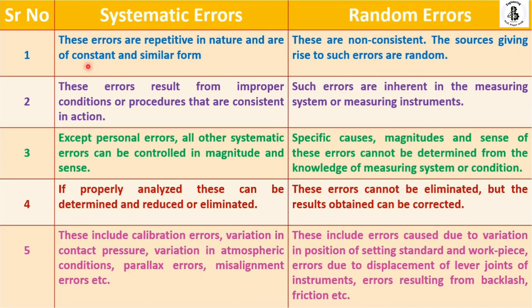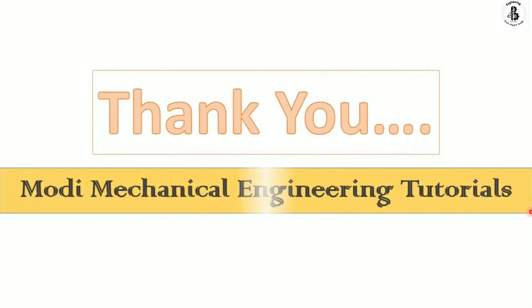So these five points represent the basic differences between systematic error and random error. I hope this helps with basic understanding of errors that are most commonly generated during measurements. If you like this, please subscribe and share Modi Mechanical Engineering Tutorials. Thank you so much and keep watching.